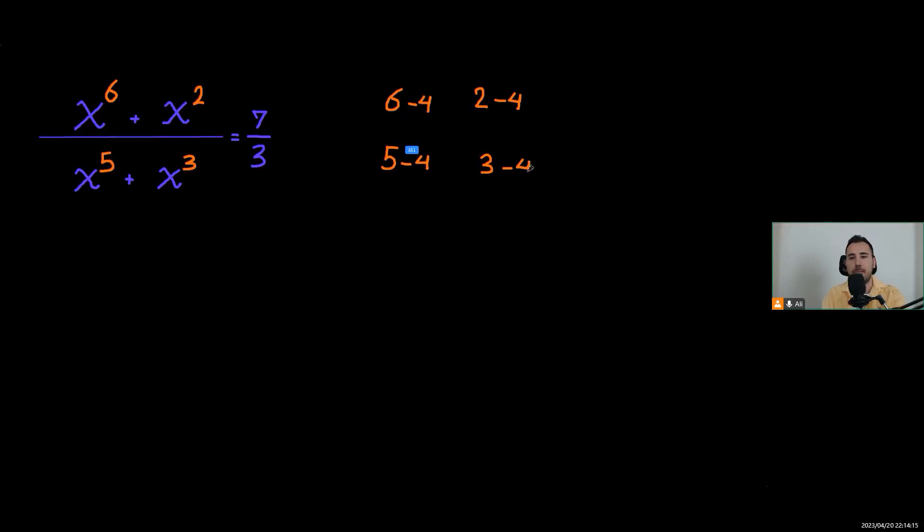This will be two, this one will be negative two, one and negative one. You see that is helpful, right? So let me write it here to see it better. The first term will be x to the second power, plus instead of writing x to the power of negative two, I will write it as one over x to the second power.